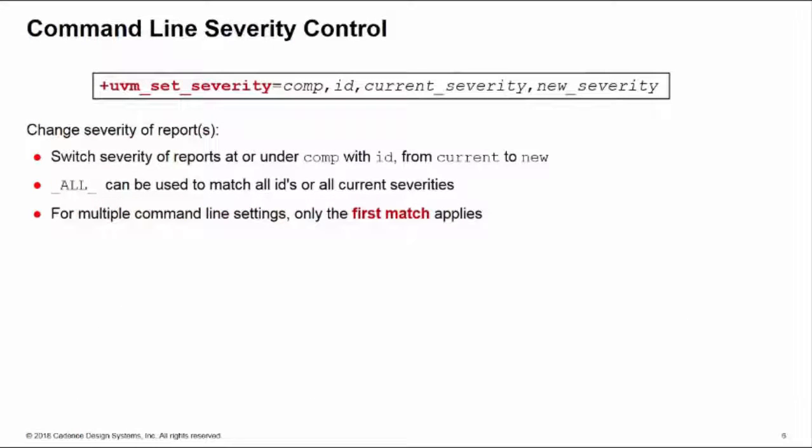Let's look at the command line options. These allow us to change the severity to reports at or under the hierarchical path name given by comp. We can specify the ID of the reports that we want to change, and we'll change their severity from a current severity to a new severity. We can use the identifier _all_ in either the ID or the current severity arguments to match all IDs or all current severities.